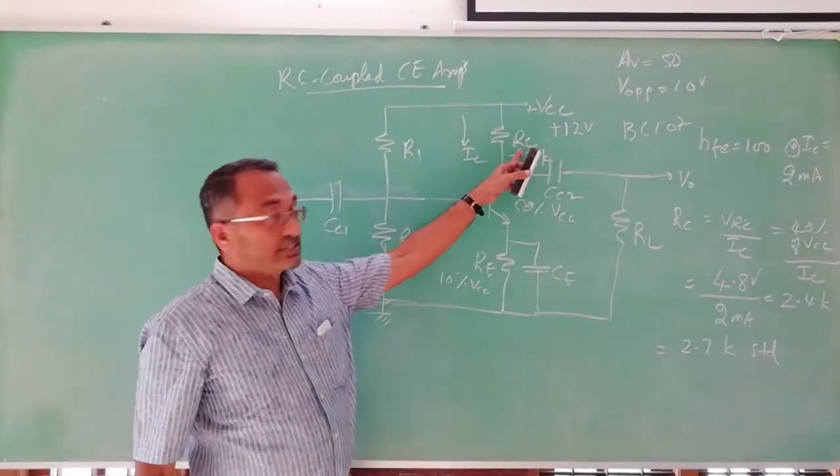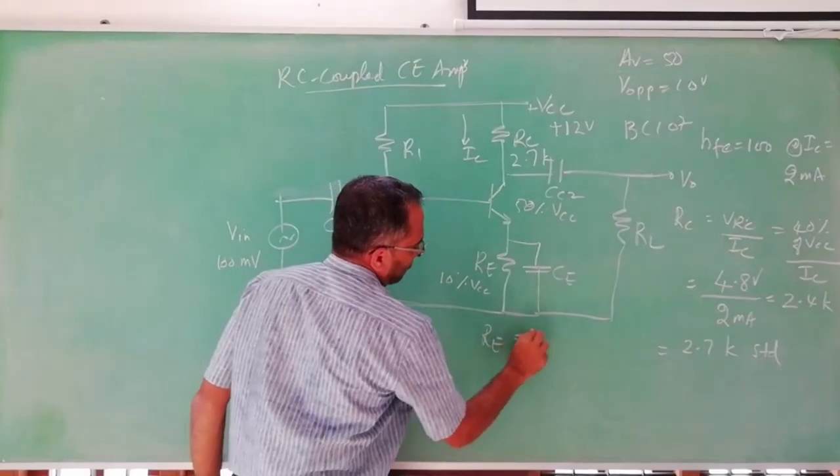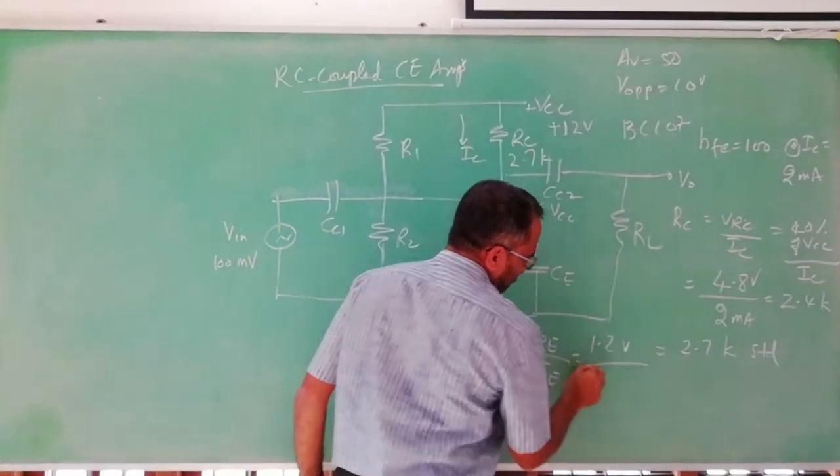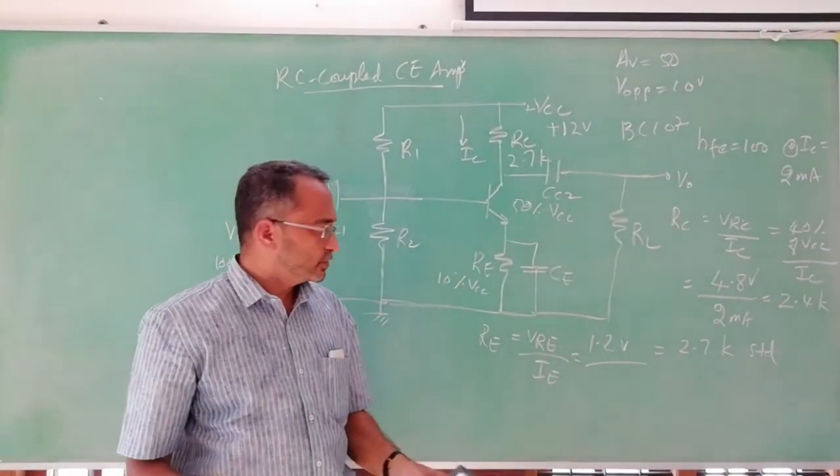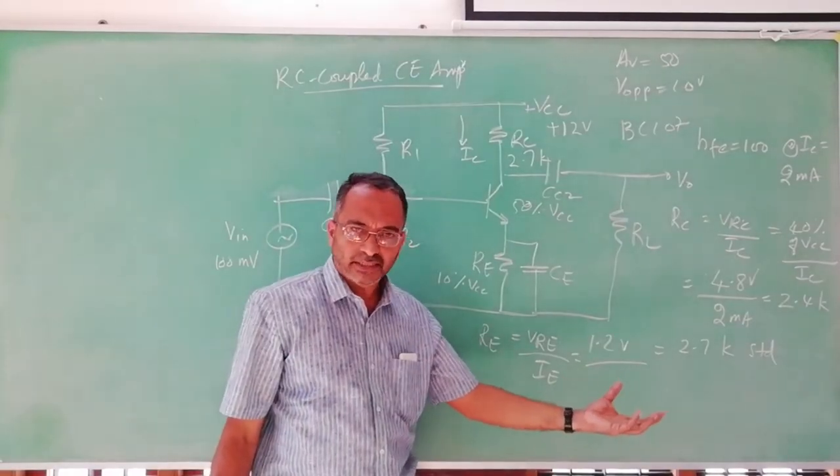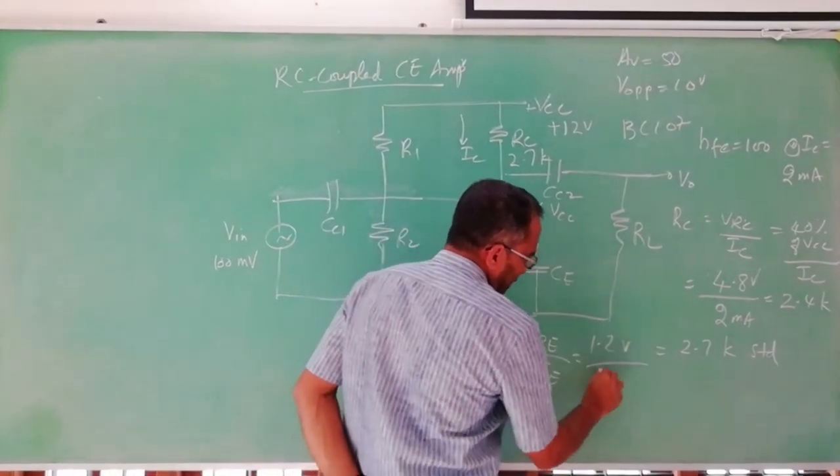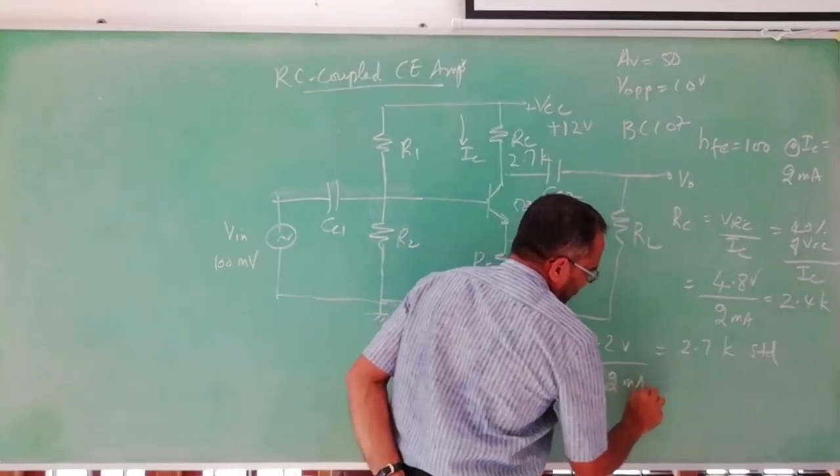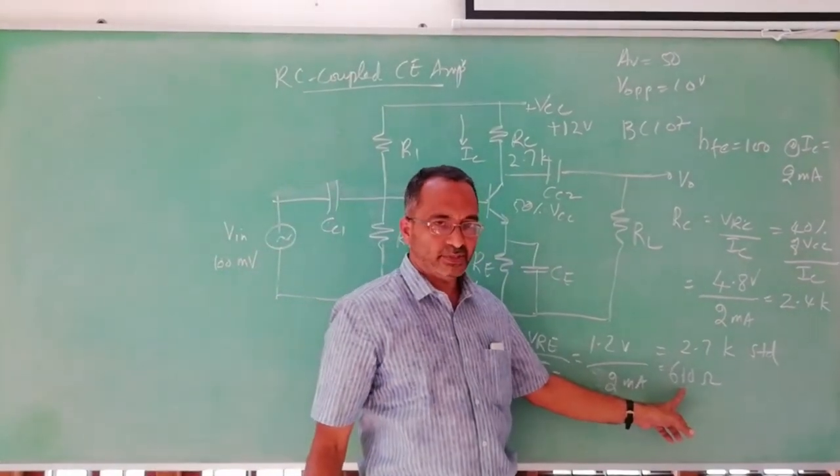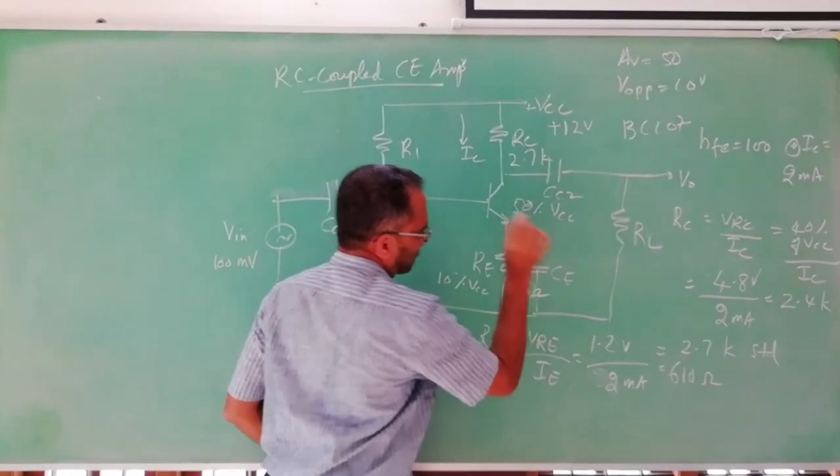Now what is remaining is RE. It is simple. Again, the RE is VRE by IE. What is VRE? VRE is 10% VCC, it is 1.2V. What is IE? For a transistor, we can assume IE and IC are same because IB is very, very meager, very small value. So IE is actually the sum of collector current and base current. So if you consider base current is very negligible, IE and IC are almost same. So here again we can take IC, IC is nothing but 2mA. So we get 610 ohms. Here again there is no standard value available, 610 ohms is not available, so we take 680 ohms here. So second resistance also designed.